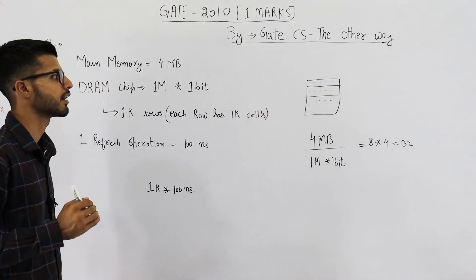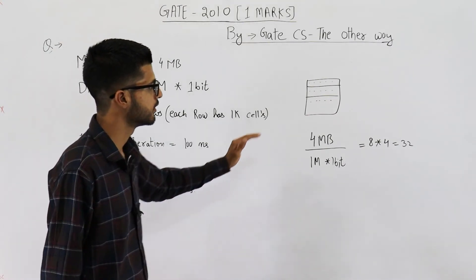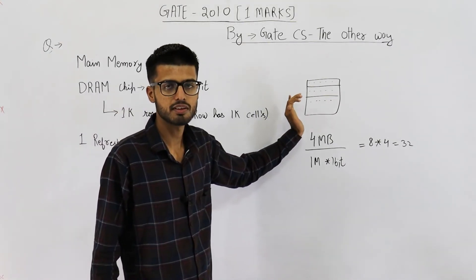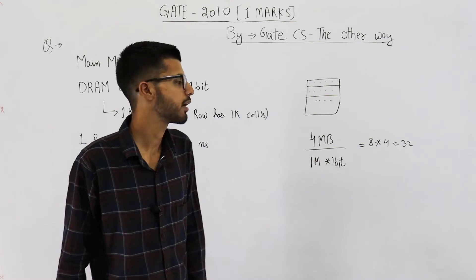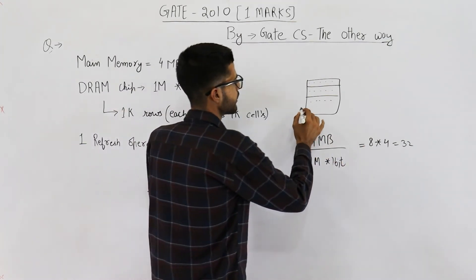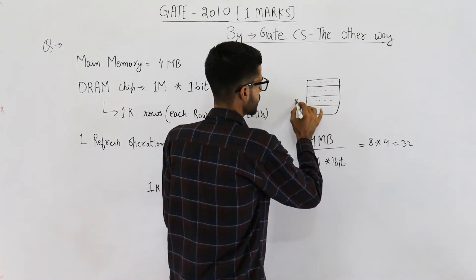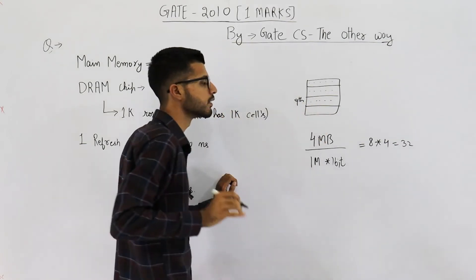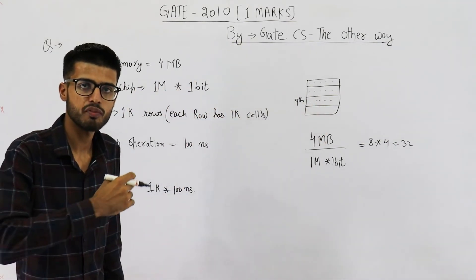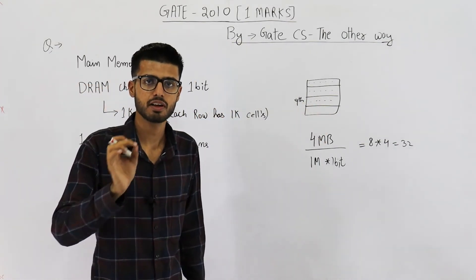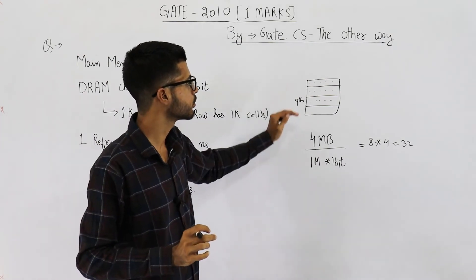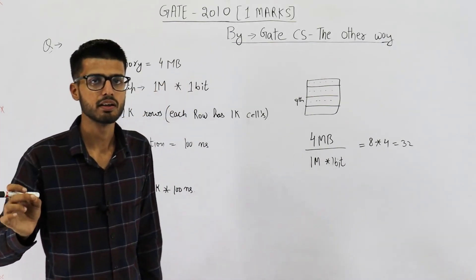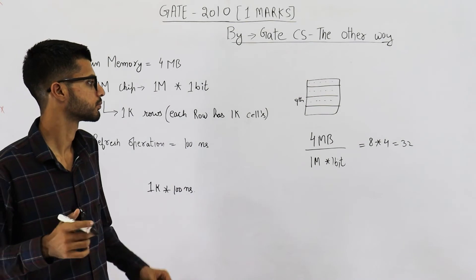The only thing that you need to take care is, these chips are refreshed row by row. Say, at some time, you are refreshing this 9th row. That means, 9th row of every chip is being refreshed at the same time. So on, you go till 1K. 1K rows are to be refreshed.